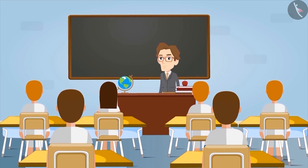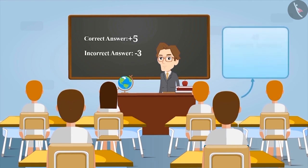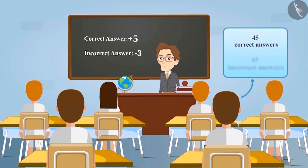Vipul appeared in an exam. The rule of the exam was that each correct answer would be given plus 5, while each incorrect answer would be given minus 3. If Vipul gave 45 correct answers and 45 incorrect answers, what should be his score?